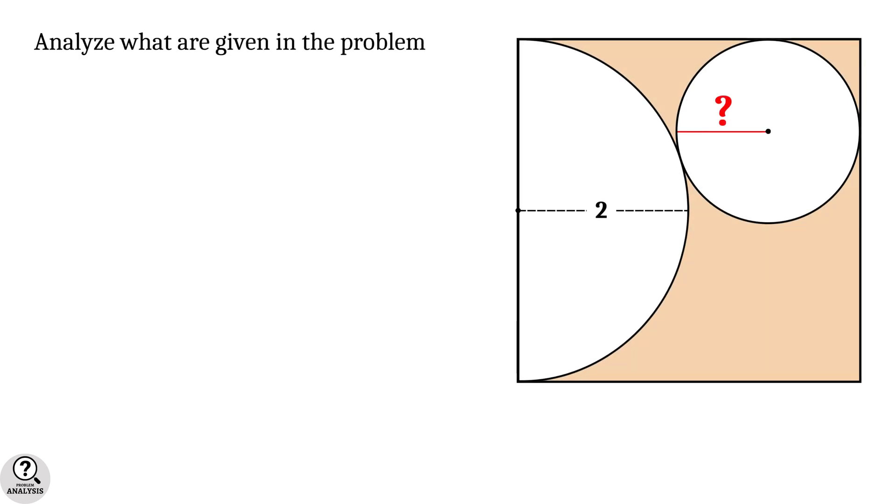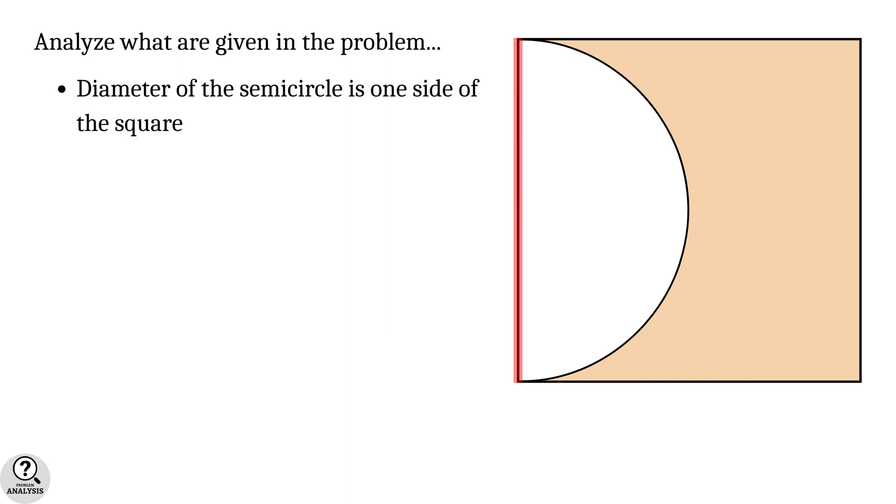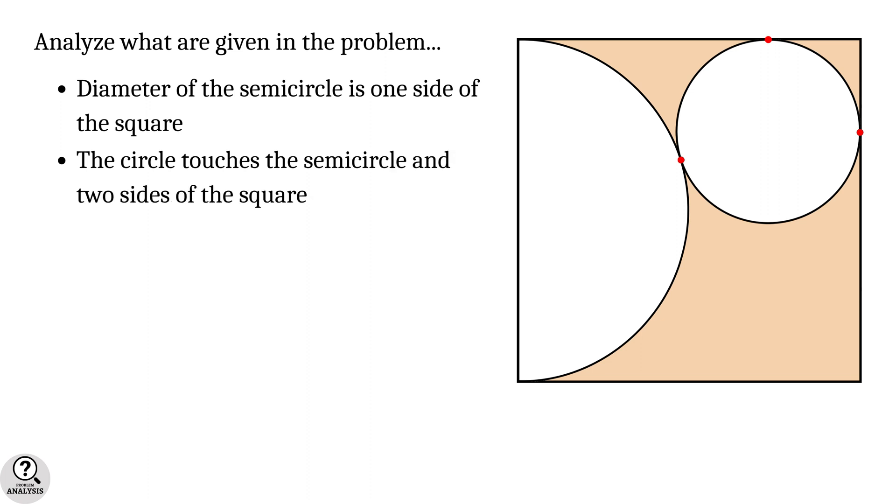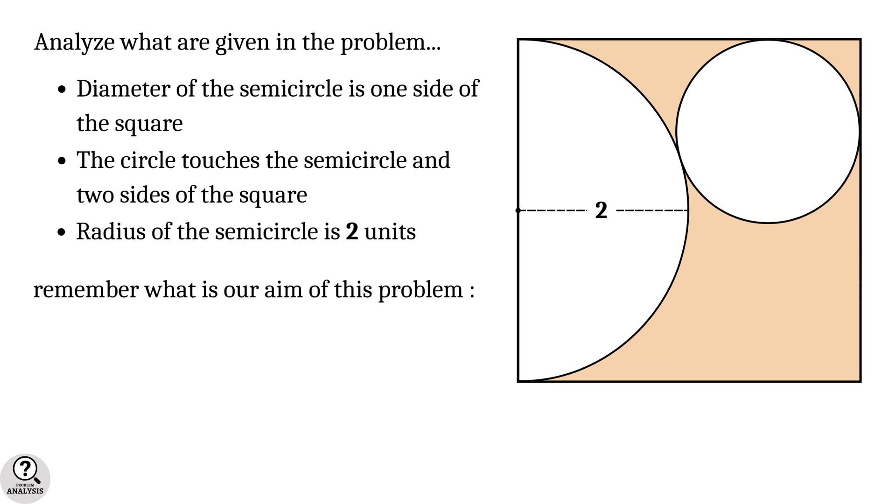First, let's analyze what are given in the problem. The diameter of the semicircle is one side of the square. The circle touches the semicircle and two sides of the square. Radius of the semicircle is 2 units. Remember what is our aim of this problem - it is to find the radius of the circle.